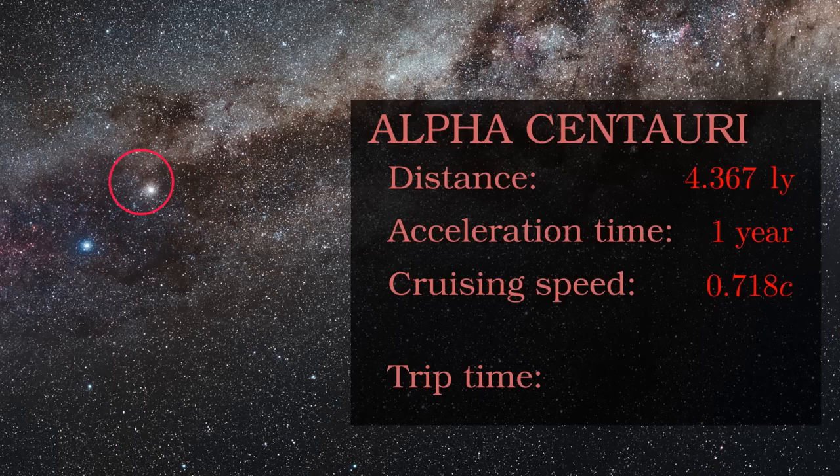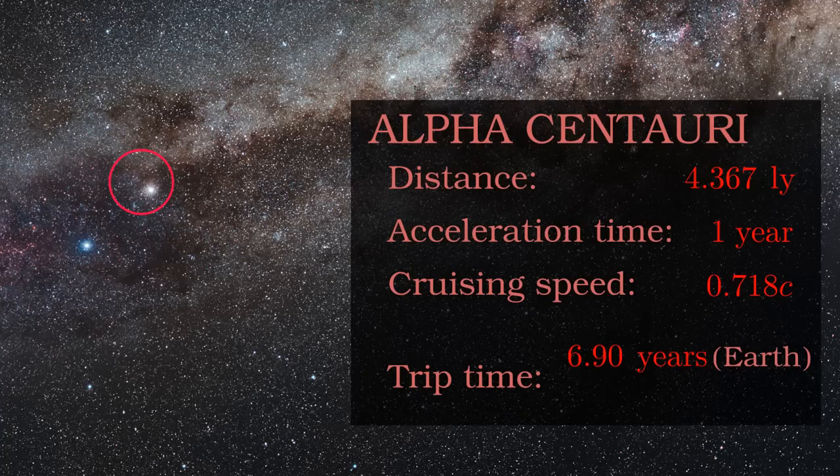Factoring in the acceleration and deceleration stages and the final speed, the spaceship would take just under 7 years to make the journey from the perspective of the Earth. This is a pretty reasonable time frame, shorter than many prison sentences.